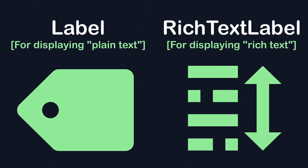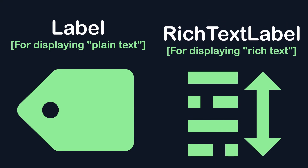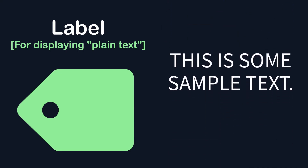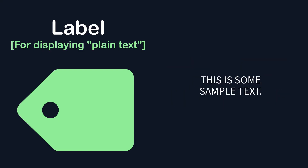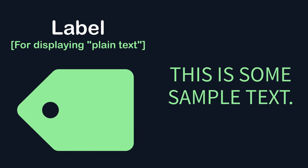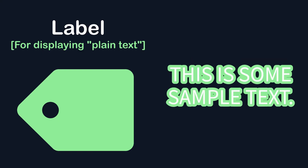Godot has two main ways of displaying text: the label node and the rich text label node. The label node is what you'd expect — just a standard way to render plain text. It gives you some settings for changing the font, size, color, or outline of the whole thing, but that's about it.